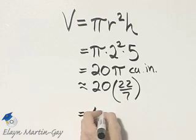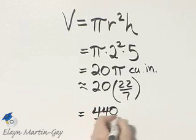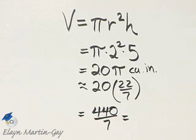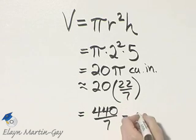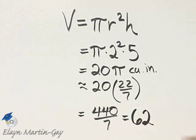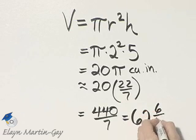This will be 440 over 7, and we'll go ahead and write this as a mixed number. If you divide 7 into 440, it will go 62 times and your remainder will be 6.